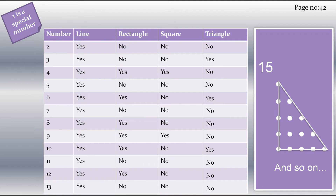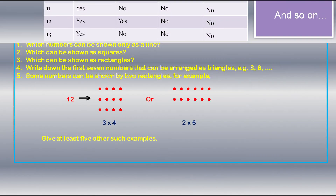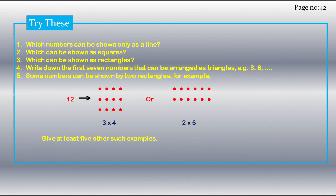Now we have completed the table. Let's move on to the next question. On page number 42, you have a box called 'Try This'. Here they have given five questions to solve. Let's answer them one by one.